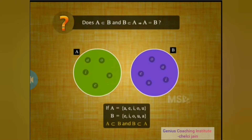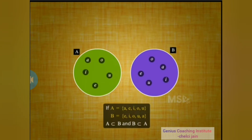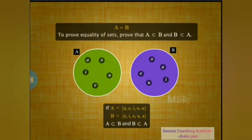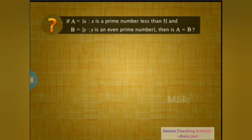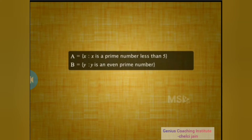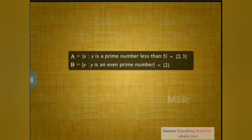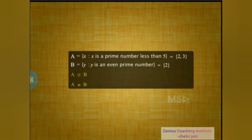For instance, consider sets A and B as given. Both A and B are subsets of each other because all elements of set A are in set B and vice versa. Although the order of the elements is different in both sets, all elements of set A are in set B and all elements of set B are in set A — and that is all we need to prove equality of sets. So set A is equal to set B. Set A includes prime numbers 2 and 3 which are less than 5, and set B includes prime number 2 which is also an even number. We find that all elements of set B are in set A, but set A has element 3 that is not in set B. So A and B are not equal sets.